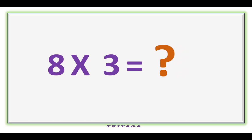8 times 3 is how much? It is 24. 8 times 4 is how much? It is 32.